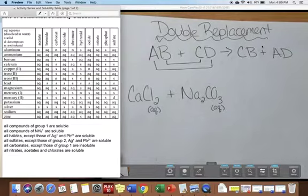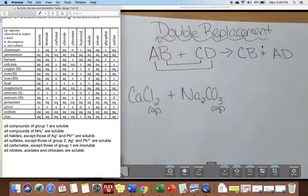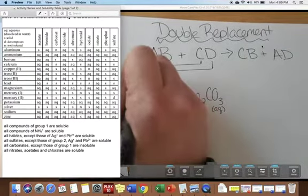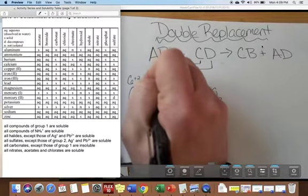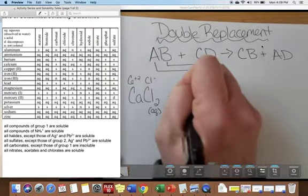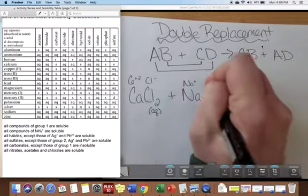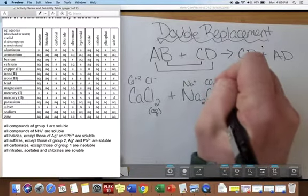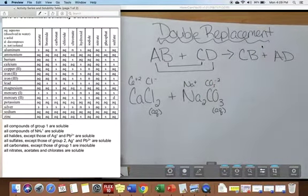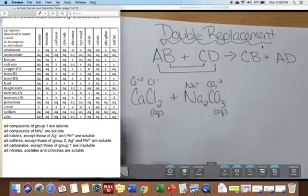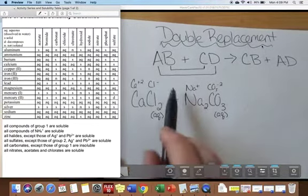So, when I do these, I like to write the charges of the ions above the compound. So, we have a Ca plus 2, a Cl minus, an Na plus, and a CO3 negative 2. That way we can really see what compounds or what ions are coming together to form compounds.